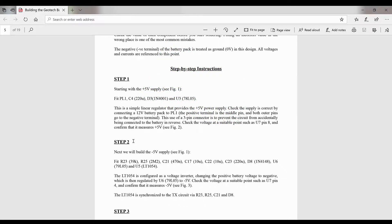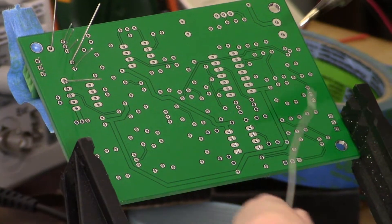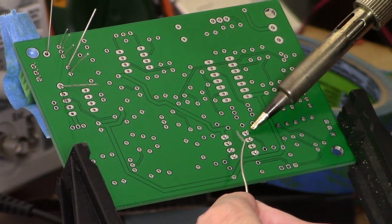A quick view of step number one: we're going to be building the plus 5 volt power supply. We're going to fit the battery connector, a 220 microfarad capacitor, a diode, and a 78L05. It's a simple linear voltage regulator providing plus 5 power supply. All right guys, here we go with step one components.